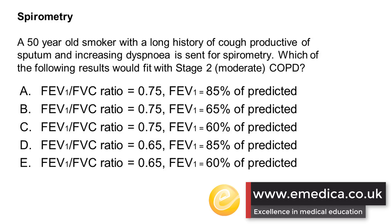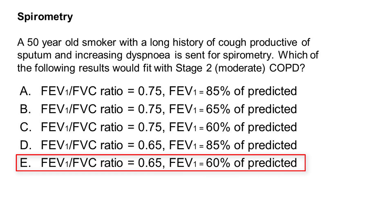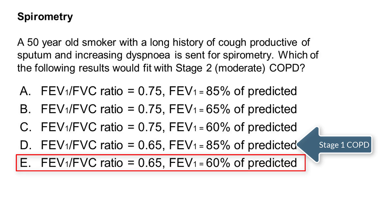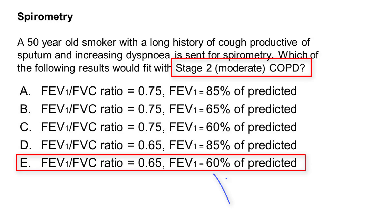Right, so it's a really difficult question. The correct answer is E. We're looking for the FEV1/FVC ratio to be less than 0.7 to give an obstructive picture. And then for stage 1, the FEV1 is actually in the normal range, which is over 80%. In this case, the question was asking about stage 2 moderate, so that's where it's between 50 and 80%.